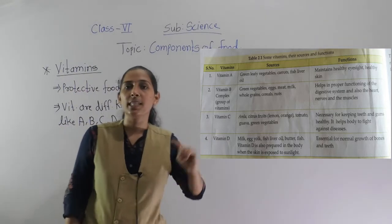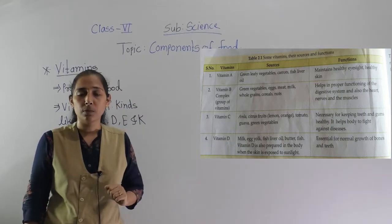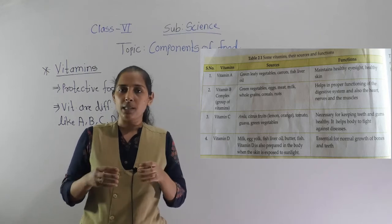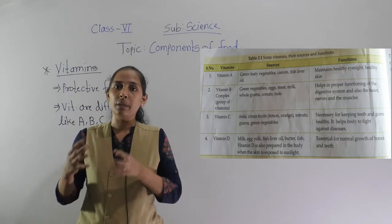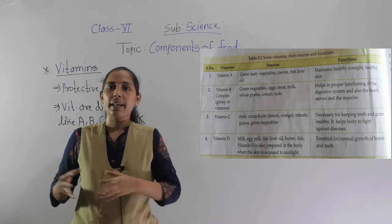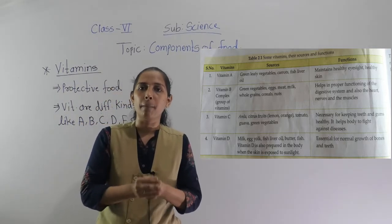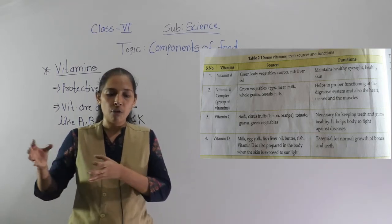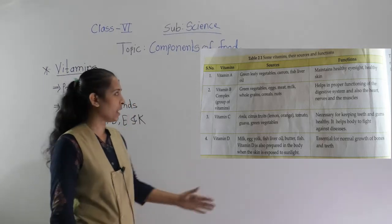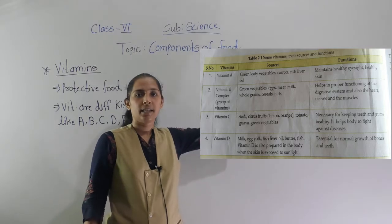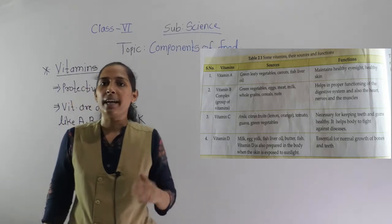Now let's see vitamin B, which is called vitamin B complex. It is called B complex because there is a group of B vitamins — for example, vitamin B1, B2, B3, up to B12. Together this group is called vitamin B complex. The sources of vitamin B are green leafy vegetables, egg, meat, milk, whole grains, cereals, and nuts.